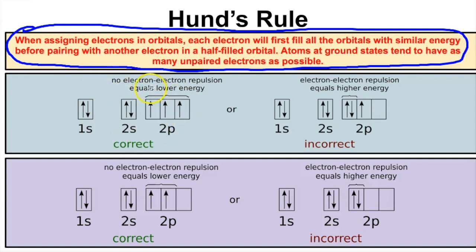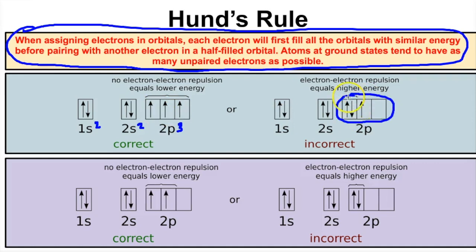Here is the correct orbital diagram for nitrogen — we can tell it's nitrogen because there are seven electrons, giving the configuration 1s2 2s2 2p3. This is the correct orbital diagram. The incorrect version violates Hund's Rule: in the 2p orbital, you must first place one electron in each orbital, all spinning in the same direction indicated by three up arrows, before going back and placing a second electron. Placing two in one box before filling the others is incorrect.